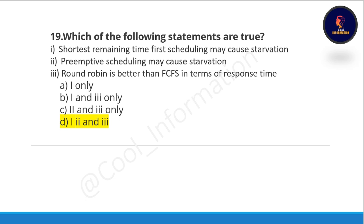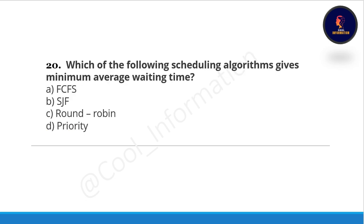The last question: which of the following scheduling algorithms gives minimum average waiting time? Options: A: first come first serve, B: shortest job first, C: round robin, D: priority. The correct option is shortest job first.